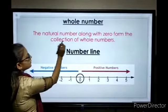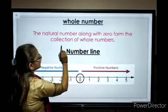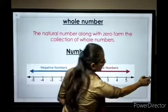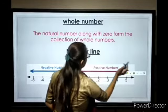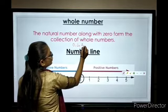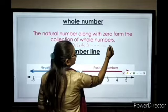Whole numbers - the natural numbers along with 0 form the collection of whole numbers. By definition, whole numbers are 0 to infinity: 0, 1, 2, 3, and so on to infinity.